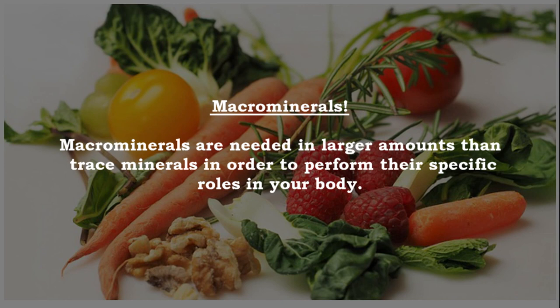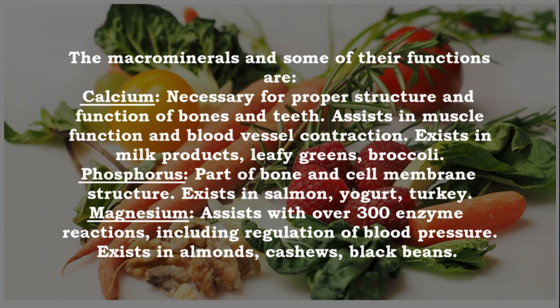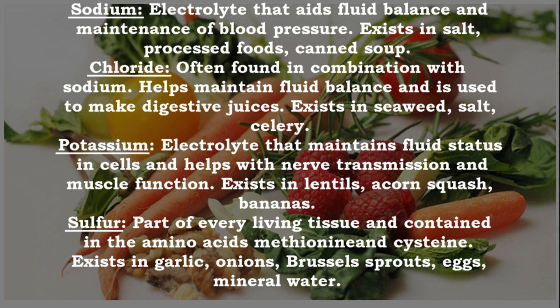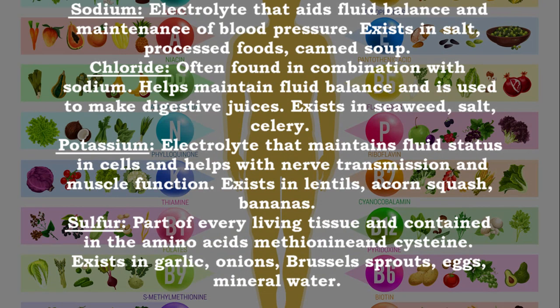Macrominerals are needed in larger amounts than trace minerals to perform their specific roles in your body. Calcium — necessary for proper structure and function of bones and teeth, and assists in muscle function and blood vessel contraction; found in milk products, leafy greens, and broccoli. Phosphorus — part of bone and cell membrane structure; found in salmon, yogurt, and turkey. Magnesium — assists with over 300 enzyme reactions including regulation of blood pressure; found in almonds, cashews, and black beans. Sodium — an electrolyte that aids fluid balance and maintenance of blood pressure; found in salt, processed foods, and canned soup.